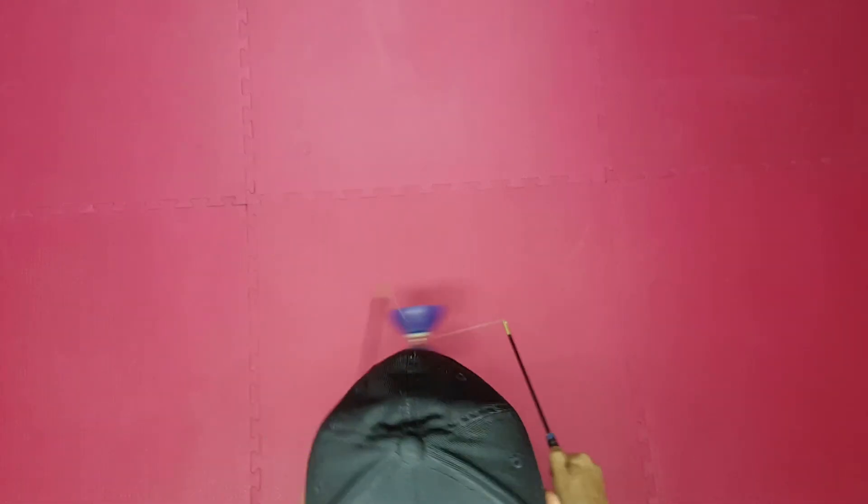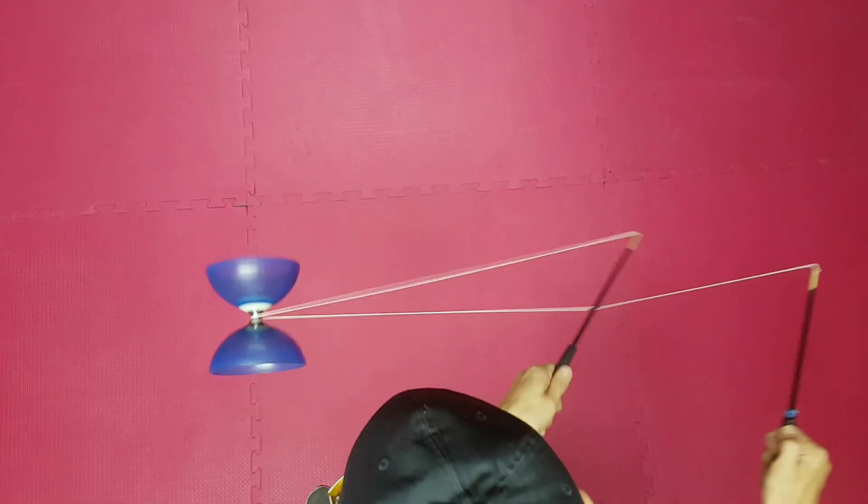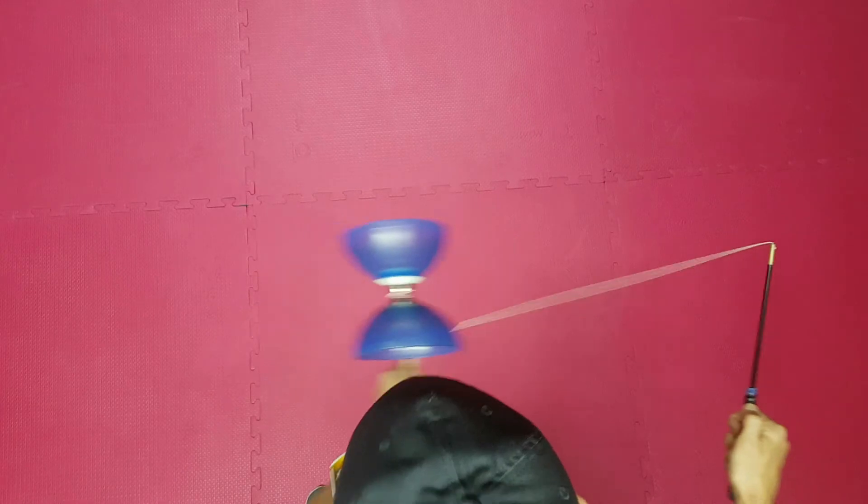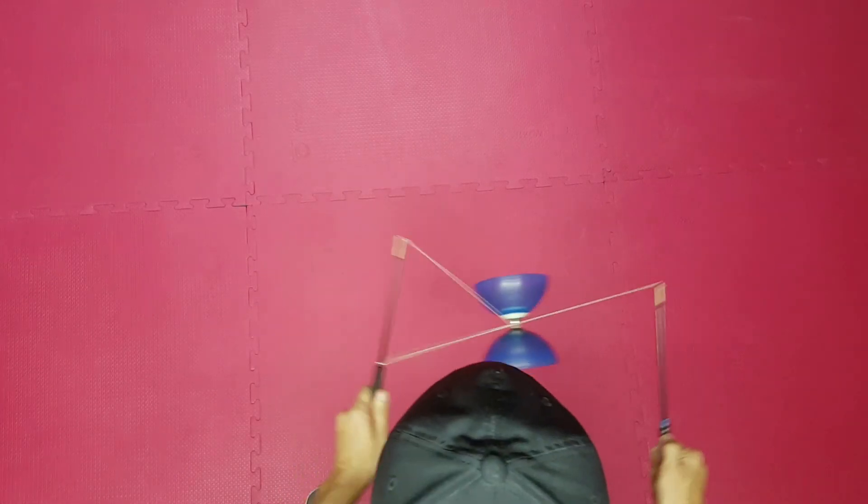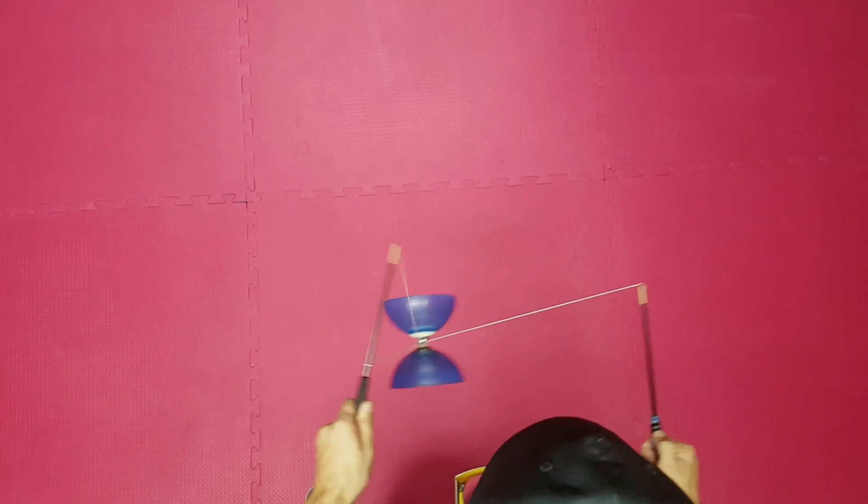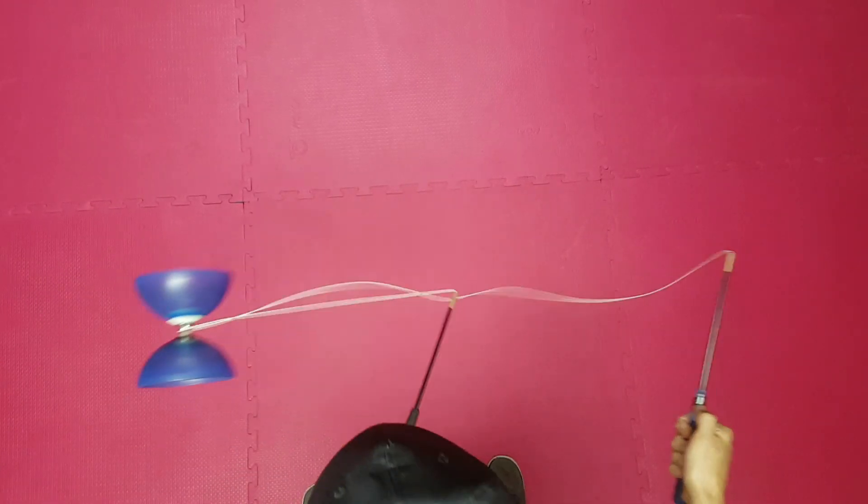Now we will repeat everything on the left side. The string touches the underside of the stick. We pull a little down with the help of the left hand and catch the Diabolo in the center. We ease the tension and toss the Diabolo over the left stick.